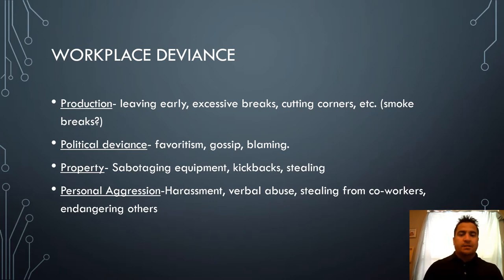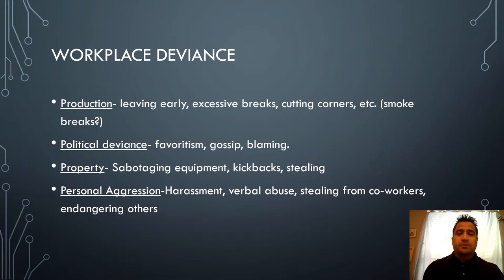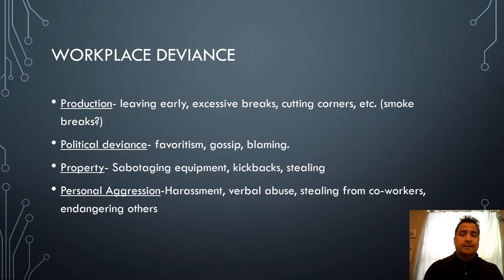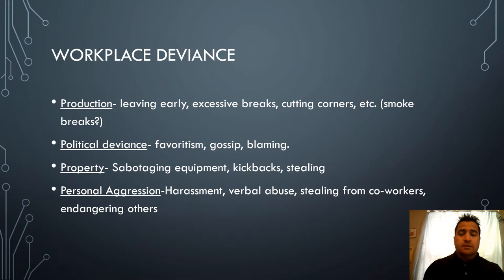Property deviance includes sabotaging equipment — for example, if a company is looking at automating jobs and people don't want to lose their positions, they might start sabotaging equipment. Kickbacks are another form, such as a purchasing manager telling a supplier they won't use their company unless they receive money under the table. Personal aggression includes harassment, verbally abusing others, stealing from coworkers, and not following manufacturing policies in ways that put others in danger. Depending on the culture within the company, people may lean toward deviance or not.